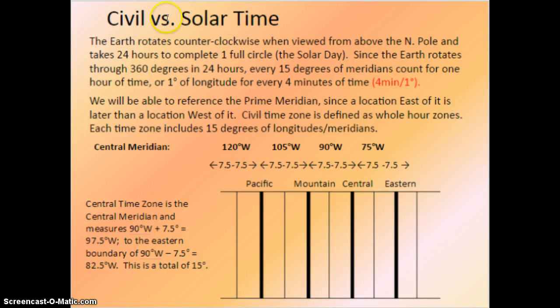Here's civil versus solar time. Civil is how we set our clocks and how we have our time zones, and solar time is simply relative to the Earth reaching its zenith, or its highest point. The Earth rotates counterclockwise when viewed from above the North Pole, and it takes 24 hours to complete one full circle, and this is our solar day. Since the Earth rotates through 360 degrees in 24 hours, we can relate 15 degrees of meridians that count for one hour of time, which is the same as one degree of longitude for every four minutes.